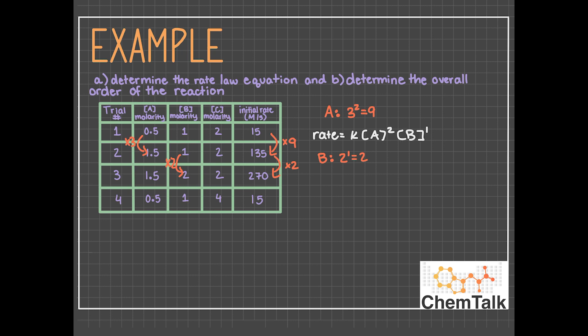And C doubles from trials 1 to trial 4, and the rate stays the same, or multiplies by a factor of 1. 2 to the 0th power is 1, so C is a zero order reactant.